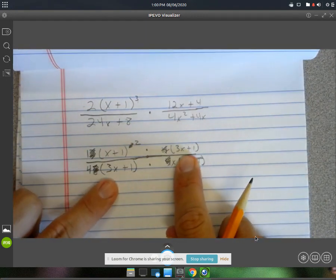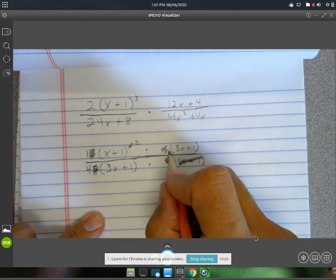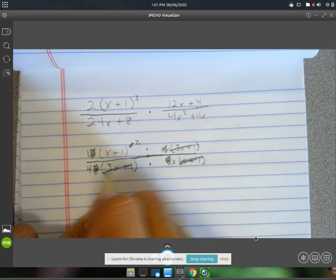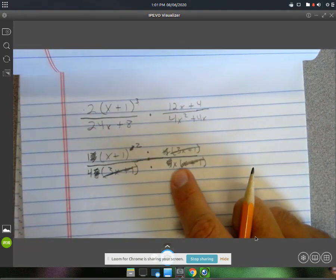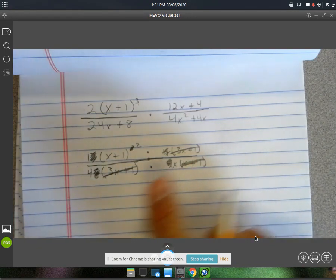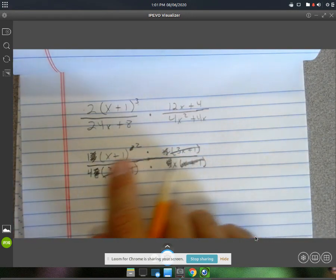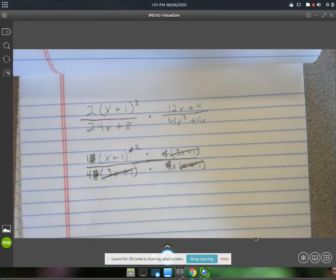You've got a 3x plus 1 and a 3x plus 1. Those will cancel. And your x will not cancel with anything. And your 4, there's no other numbers up there left to cancel with. So we're done with this one.